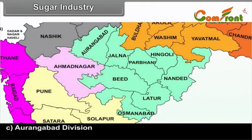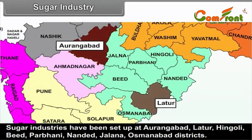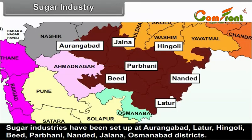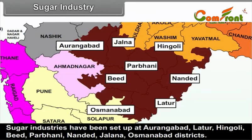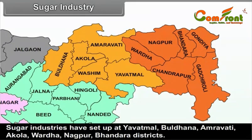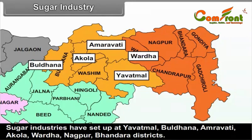C. Aurangabad Division: Sugar industries have been set up at Aurangabad, Latur, Hingoli, Beed, Parbhani, Nanded, Jalna and Osmanabad districts. D. Nagpur-Amravati Division: Sugar industries have been set up at Yavatmal, Buldana, Amravati, Akola, Wardha, Nagpur and Bhandara districts.